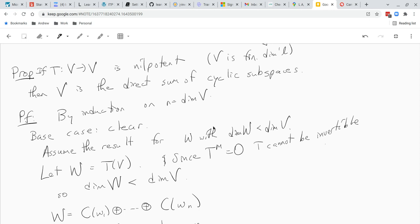The base case being when V has dimension one. So any non-zero vector in V will be a cyclic vector in that case, so this theorem is kind of trivial when V has dimension one.